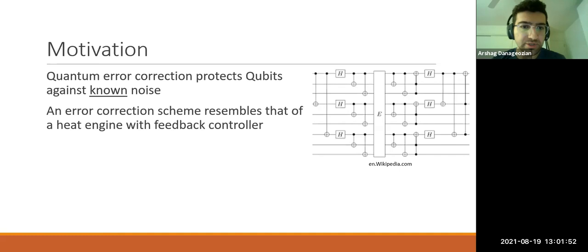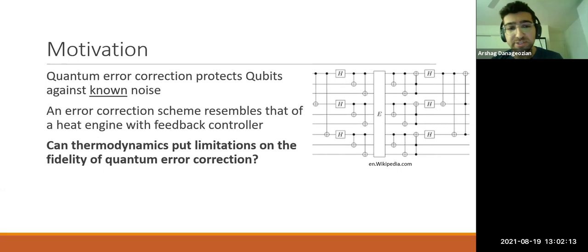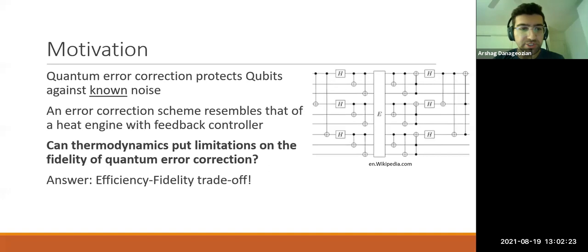If you look into how error correction works, you can see that the scheme resembles that of a heat engine - a well-known concept in thermodynamics that operates with a feedback controller. Through this link between thermodynamics and error correction, one can immediately ask whether thermodynamics can put any limitations on the fidelity of error correction. That's the question we explore. The take-home message is: yes, thermodynamics can put limitations, and in its most simplified form you can think of it as an efficiency-fidelity trade-off.